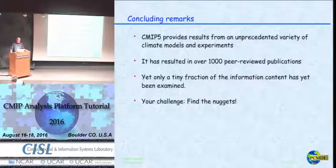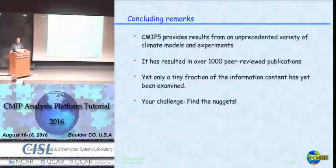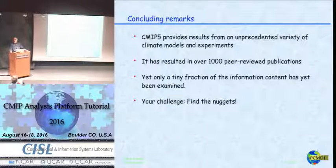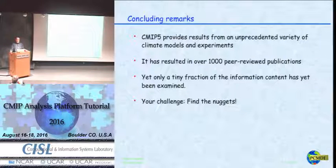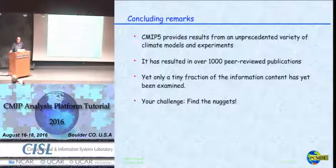CMIP5 provides results from an unprecedented variety of climate models and experiments — it's a huge resource that required enormous effort from the modeling groups. It's resulted in over a thousand peer-reviewed publications, yet only a tiny fraction of the information content has really been examined, so there's an awful lot of opportunity still. The challenge is to find the nuggets — ask interesting questions, decide whether this archive is appropriate to answer them, and maybe it is or maybe you need to design a new experiment.